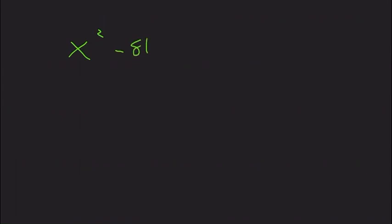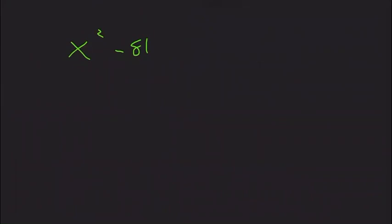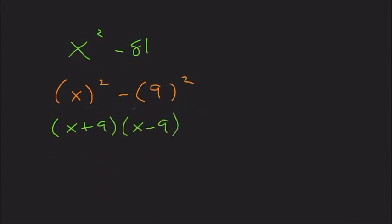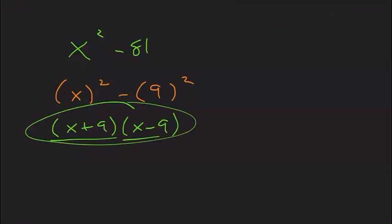Let's look at another one. This one we can rewrite as x squared minus — what goes here? It's going to be 9 squared, because 9 times 9 is 81. Then just like before, this becomes (x + 9) times (x − 9). If you multiply these two things back together, you'd wind up back at the original. So again, we're just breaking things apart into the things being multiplied.